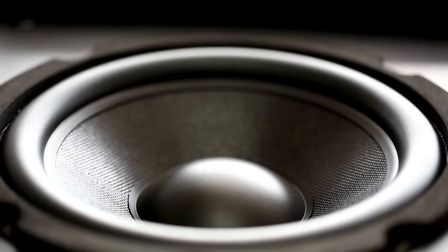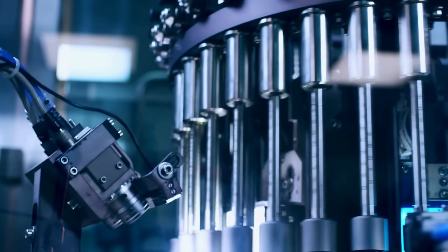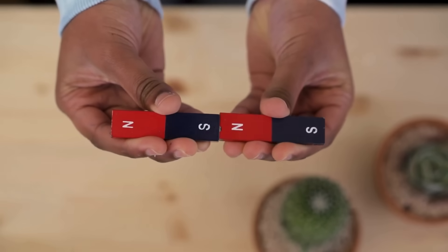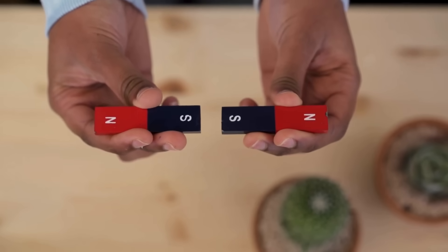Magnets are everywhere, from our powerful speakers and sensitive microphones to our iconic electric guitars and robust industrial machinery. But have you ever wondered how they're made? Specifically, how a block of metal transforms into a powerful magnet?